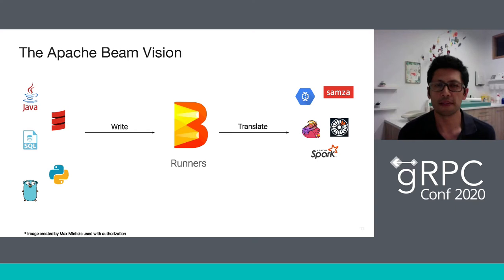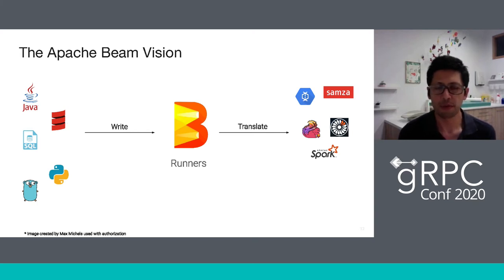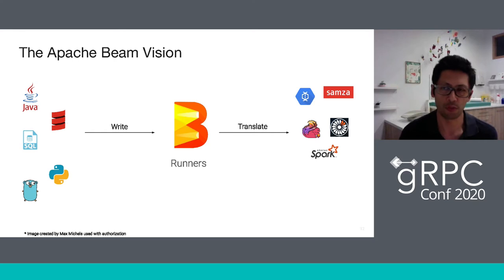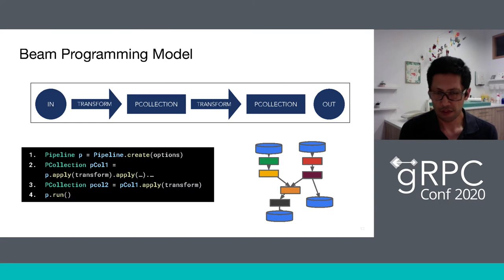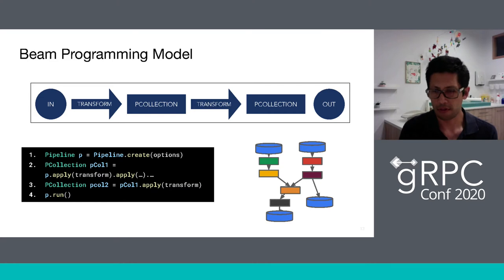The model works like this: we define a pipeline that uses a collection of data that we process in parallel. We call this a PCollection, and then we start applying transforms to these collections to produce new collections and output the data. It's a basic dataflow model — a simple graph of steps. Each of these transforms is parameterized by the user with their user-defined function.